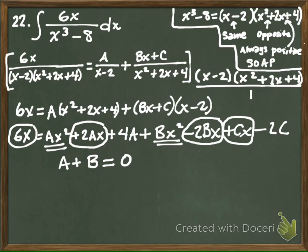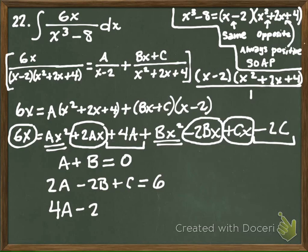So what's the equation going to look like? 2A minus 2B plus C equals 6. And then what we have left over is this 4A and this minus 2C. And what does that have to equal? Zero.